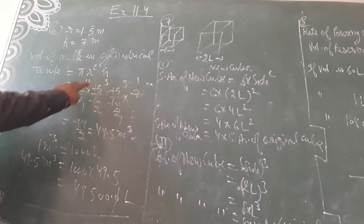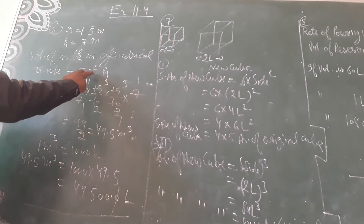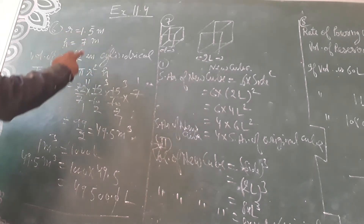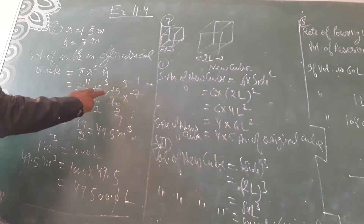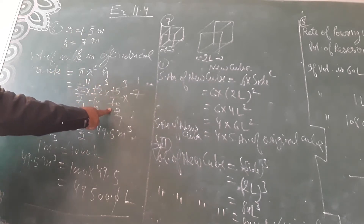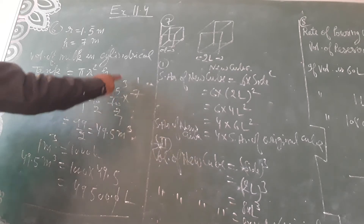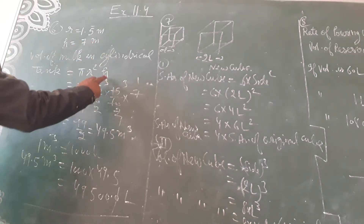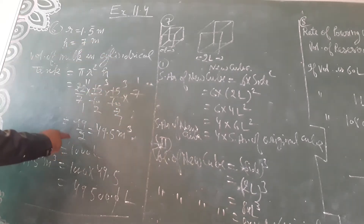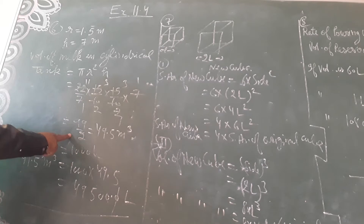Using pi = 22/7, r = 1.5 = 15/10, so r squared = 15/10 multiplied by 15/10, and h = 7. The answer comes to 99 upon 2.